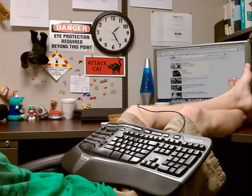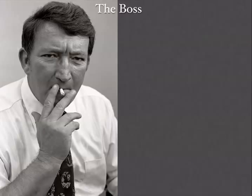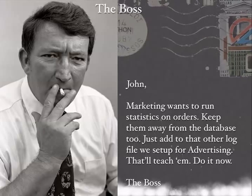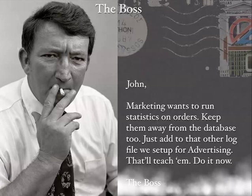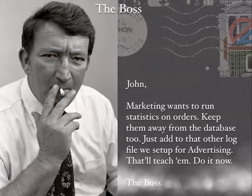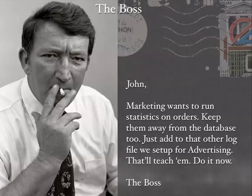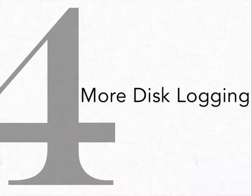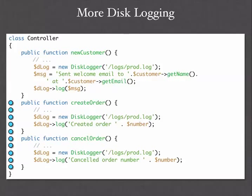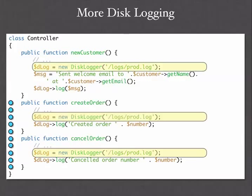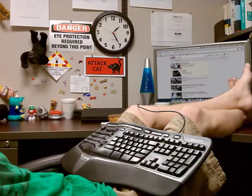The boss comes back and says: 'John, marketing wants to run statistics on orders. Keep them away from the database too — just add to that other log file we set up for advertising. Do it now. Signed, the boss.' So we add more logging. We have a create method, a create order method, and a cancel order method handling different routes on our application. We slap in some logging there, but it's the same object, so we're kind of duplicating code — but at this point we probably don't care.